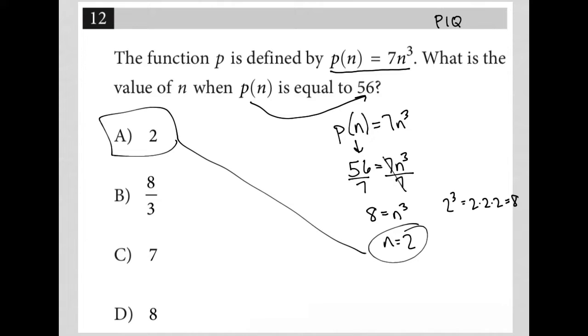Or I could use a calculator: 8 = n³, and I can cube root both sides, in which case I'd get 2 = n that way.